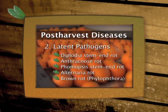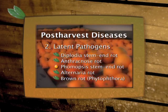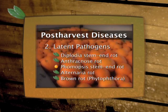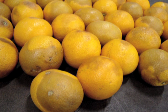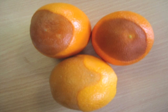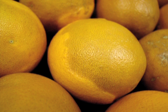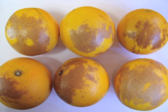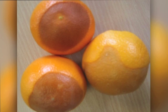The first sign of Phomopsis stem end rot is softness around the stem end of the fruit, with no initial discolouration. Thereafter, a very slight off colour and eventually a tan to brown and almost black colour develops. The infected tissue shrivels a little, causing a shoulder or ridge to form between decayed and healthy tissue. The pulp becomes mushy, but there is no discolouration, and an unpleasant rancid odour develops.